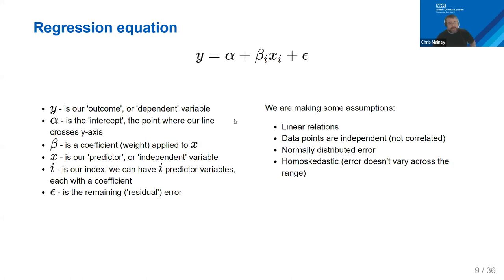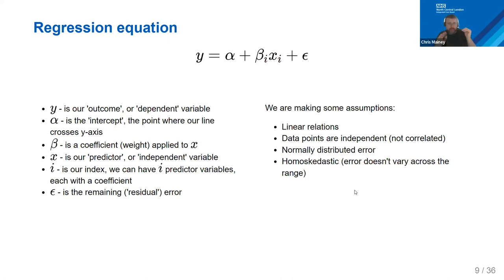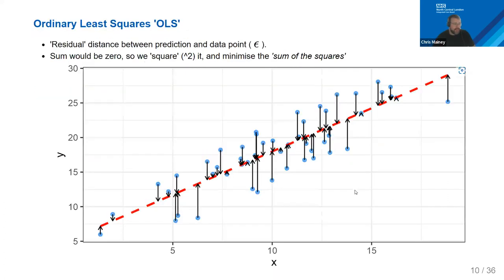The linear model makes a bunch of assumptions: the relationship is linear — roughly the same all the way along; data points are independent — completely separate estimates of X and Y; there is normally distributed error; and homoscedasticity — the variance is the same all the way along the range, not much larger at one end than the other.